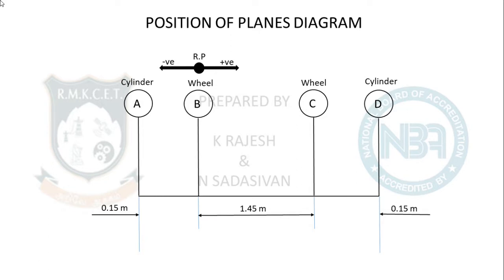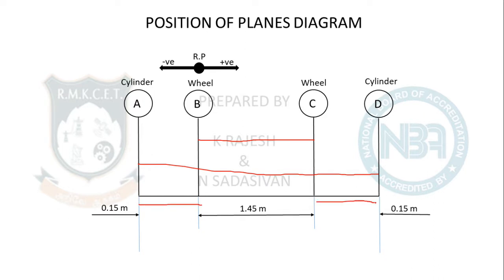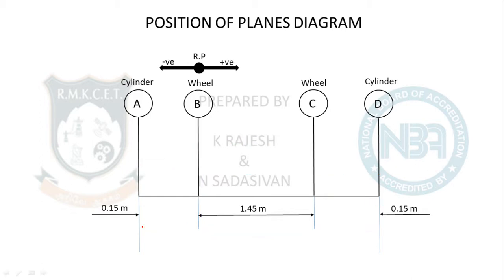The distances from the reference plane are what is required for calculation. The wheel centerline distance is 1.45 m and the engine centerline distance is 1.75 m. Subtracting gives 300 mm; split as 150 mm on each side. So the distances become: A = −0.15, B = 0 (reference), C = +1.45, D = +1.60. Total span is 1.75 m.